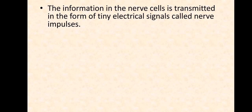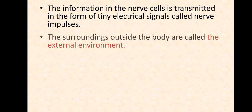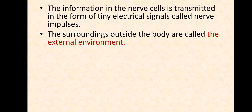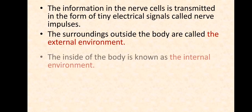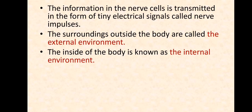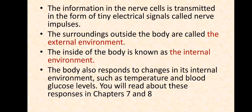The information in nerve cells is transmitted in the form of tiny electrical signals called nerve impulses. The surroundings outside the body are called the external environment, and the inside of the body is known as the internal environment — for example, body temperature and blood glucose levels. You will read more about responses to the internal environment in chapters 7 and 8.